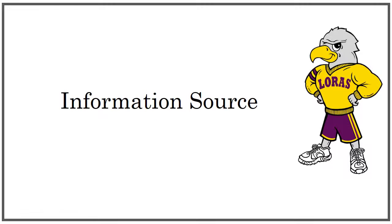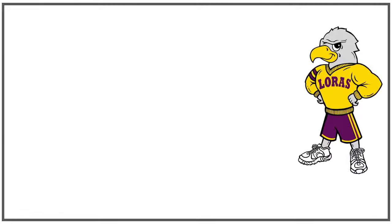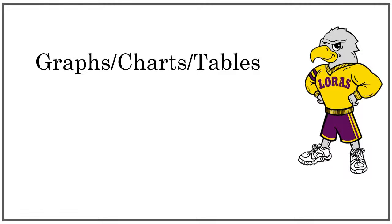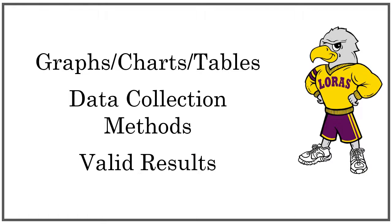The first thing to look for is where the author is getting their information from. In a reliable article, this will be easy to do, as the sources of facts and claims will be indicated using in-text citations and footnotes in scholarly articles, or links to the source of the information in authoritative sources. Reliable sources reporting on research should include the data that was collected using graphs, charts, or tables. Scholarly articles will also tell you how they collected and analyzed the data and how confident the authors are in the validity of their results.